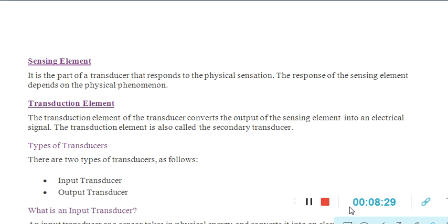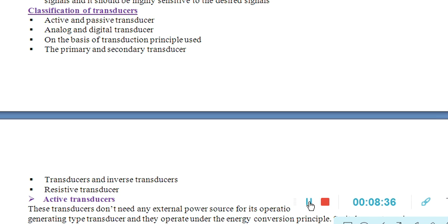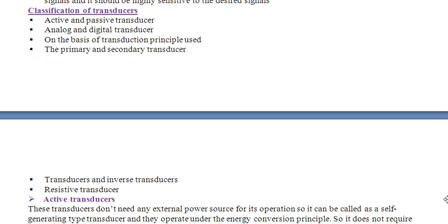Now we will discuss the classification of transducers. Transducers are mainly divided into various types: active transducer, analog transducer, and on the basis of transduction principle they are divided into primary and secondary transducers. There are also transducer and inverse transducer, and resistive transducers.